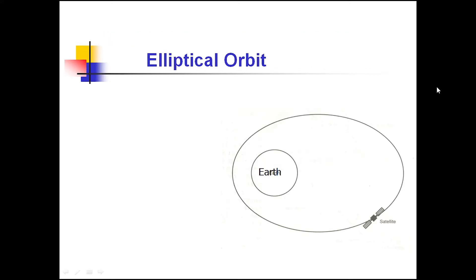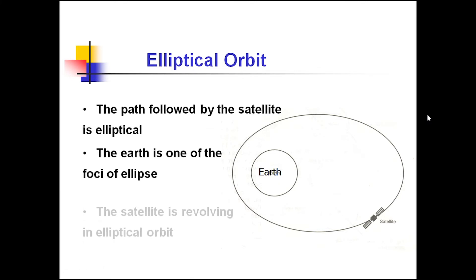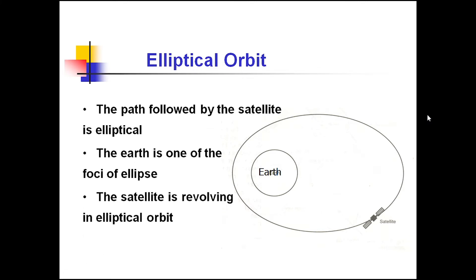In an elliptical orbit, the path followed by the satellite is an ellipse. Earth is at one of the foci of the ellipse. The satellite revolves around Earth, and the path followed in an elliptical orbit is elliptical in shape.